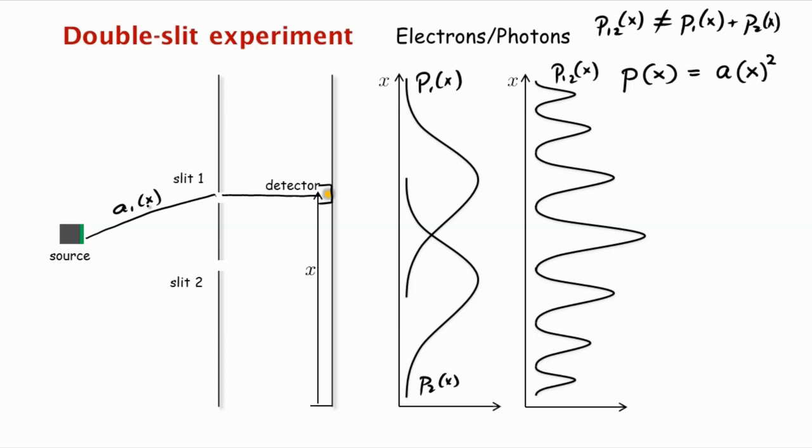And similarly, there's a probability amplitude A2 of x that the electron went through slit two and ended up at x. Again, A2 of x is either positive or negative. When we try to detect the electron, the probability that we detect it there is the square of the total amplitude of the electron being at x, where the total amplitude is A12 of x, which is A1 of x plus A2 of x.